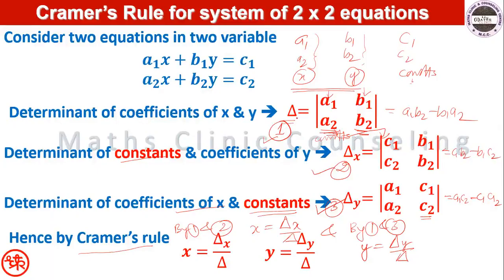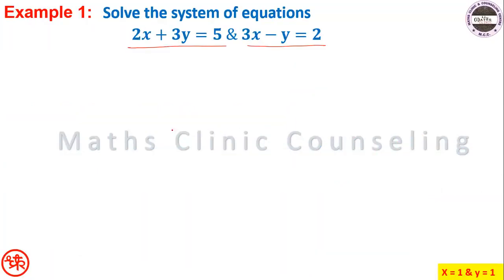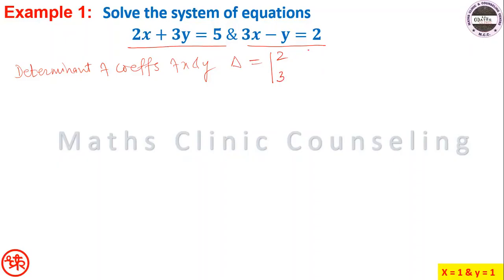Solution. Step 1: write the determinant of coefficients of x and y. Delta equals the determinant [2, 3; 3, -1] which equals 2·(-1) minus 3·3, that is minus 2 minus 9, equal to minus 11.